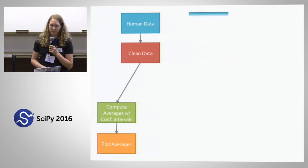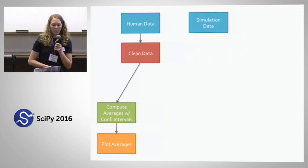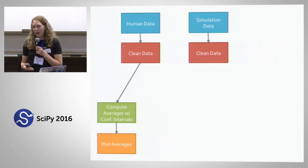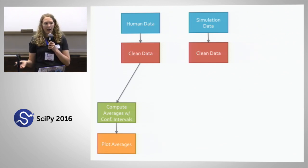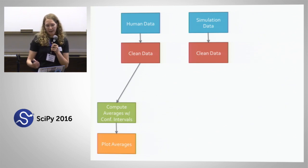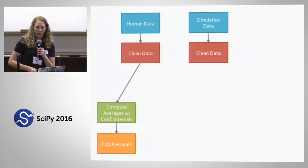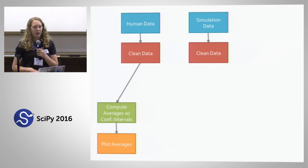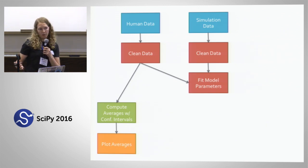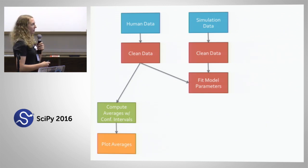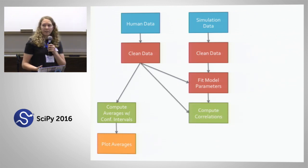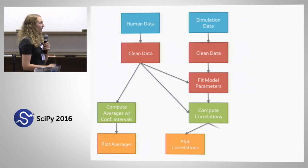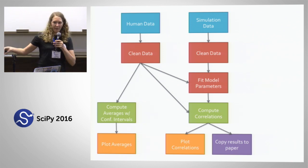If this is a modeling project, then maybe we also have some simulation data from a model. We want to do the same thing with that simulation data — clean it, maybe convert it from a database or NumPy array to CSV with the same labels, then fit the model to the human data with some free parameters. Once we've fit it, we compare the human data and the model data, compute correlations, plot those comparisons, and then take all these results and put them in the paper.